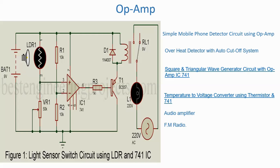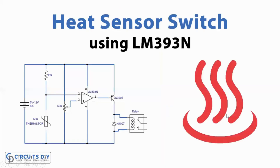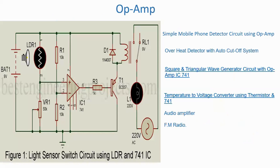After the first practical, we will do one more circuit — that is a heat sensor switch. Here the IC is different, that is LM393. This is also an Operational Amplifier IC. So we will do these two circuits. Let us first go to the first circuit.